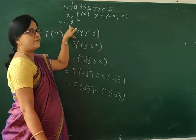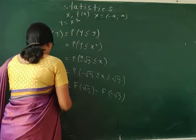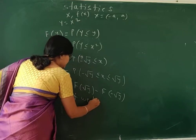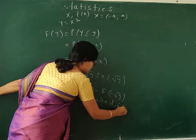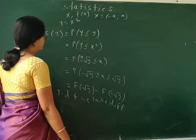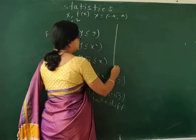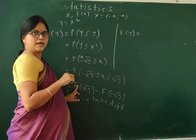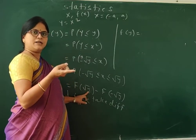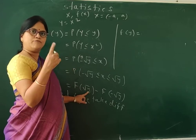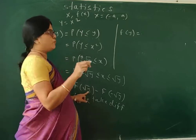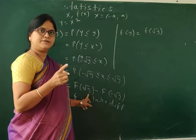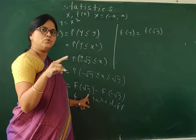To find the probability density function, we will take the differentiation of the distribution function with respect to y. So differentiating F_Y(y) = F(√y) − F(−√y), we get the PDF f_Y(y). The derivative of F(√y) is f(√y) times the derivative of √y, which is 1 divided by 2√y.